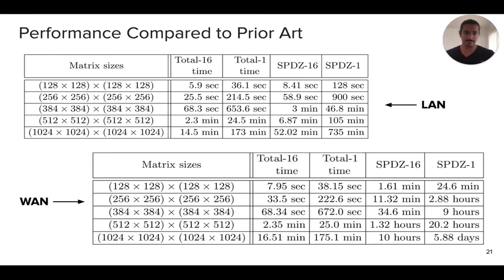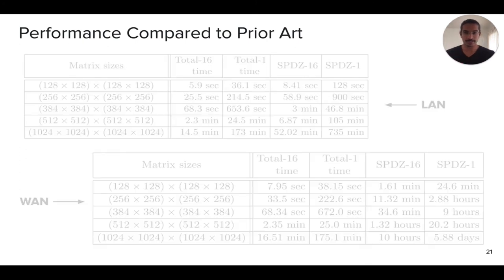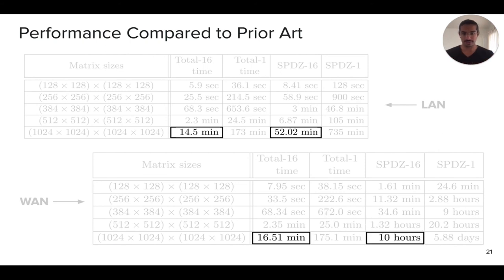This is a big chunk of the results on both the LAN and the WAN setting. On the left, we have the matrix sizes, which is going from 128 by 128 size matrix triples to about a thousand by thousand size matrix. On the right, we have four columns. We have total time one and total time 16, and then SPDZ 16 SPDZ one. SPDZ 16 SPDZ one referred to the prior state of the art protocol, which is the SPDZ protocol, with all the advances that have happened over the years. Total time refers to the time of our protocol. The 16 and one refer to implementations over 16 cores versus one core. The top table is in the LAN setting and then the bottom table is in the WAN setting. These are fairly standard network settings, which we have given the details in the paper. Instead of presenting all these results, I'm going to focus on four specific numbers and then kind of highlight some of the key results here.